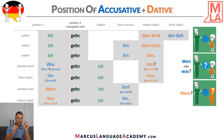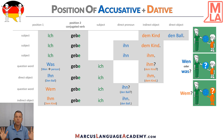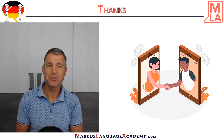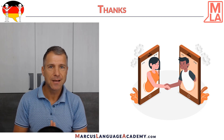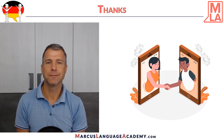So this is a little bit the positioning of accusative and dative in a sentence. Those are rules, so you have to apply them. Obviously, if you make mistakes in the positioning, most people would understand, but it wouldn't be correct. I hope you enjoyed this video and understood a little bit more about the structure of German sentences. Thank you very much, and I will see you soon in my next video.